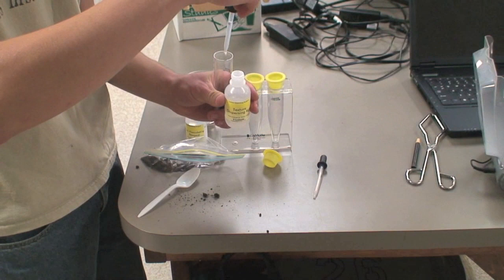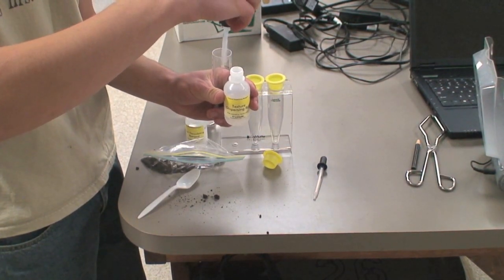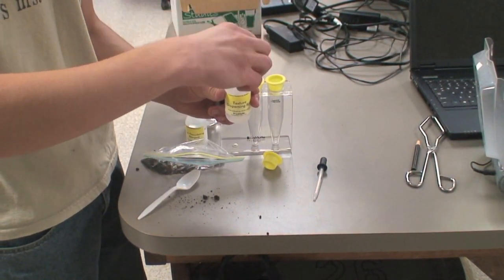Add one milliliter of texture dispersing reagent to the tube. You may find it helpful to use the supplied dropper.